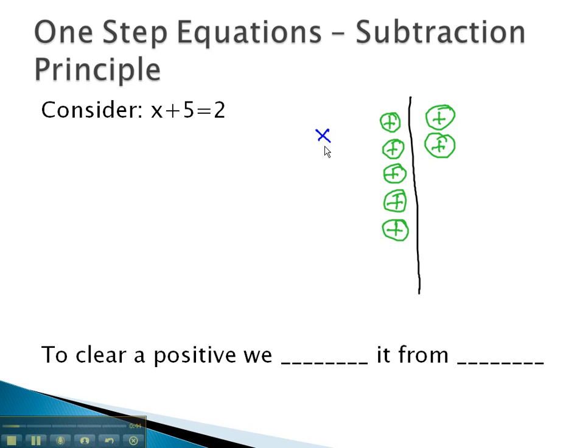To know what our x is equal to, we need it to be alone. We need to get rid of these 5 distracting positives. Well, the way we can get rid of positives is by introducing negatives: 3, 4, 5, because each negative will subtract out with a positive, leaving just the x alone behind.